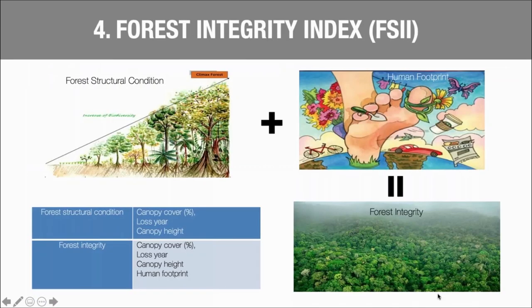A high Forest Structural Condition Index helps identify undisturbed areas that have high stature and high cover. Conversely, low structural index values indicate areas that are low in stature or recently disturbed. Forests with high structural condition can support high levels of biodiversity and ecosystem services and are highly relevant to conservation planning. Dr. Andy Hansen is also working to produce a Forest Integrity Index, which combines maps of forest structural condition with the Human Footprint Index — so forests with high integrity have high structure and low human pressure, helping identify the last of the wild forests with high conservation values.